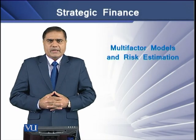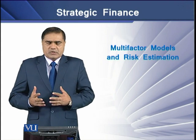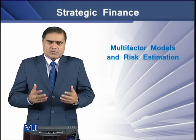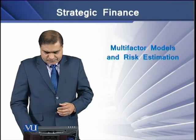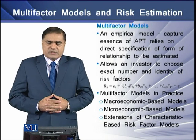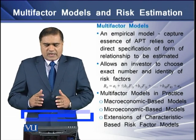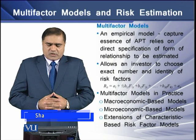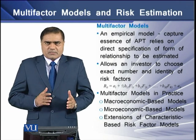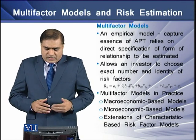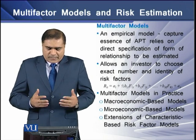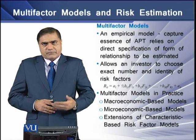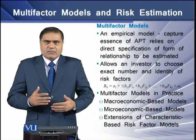The empirical literature in finance shows that the arbitrage pricing theory is unable to identify risk factors while valuing risky assets. The solution to this problem is the introduction of multi-factor models. A multi-factor model is an empirical model that captures the essence of APT and relies on the direct specification of the form of the relationship that the researcher is interested to estimate. This model allows an investor to choose the exact number and identify the exact risk factors. The return of each asset is a function of certain factors like F1, F2, and so on — these are the multi-factors combined into this empirical model.